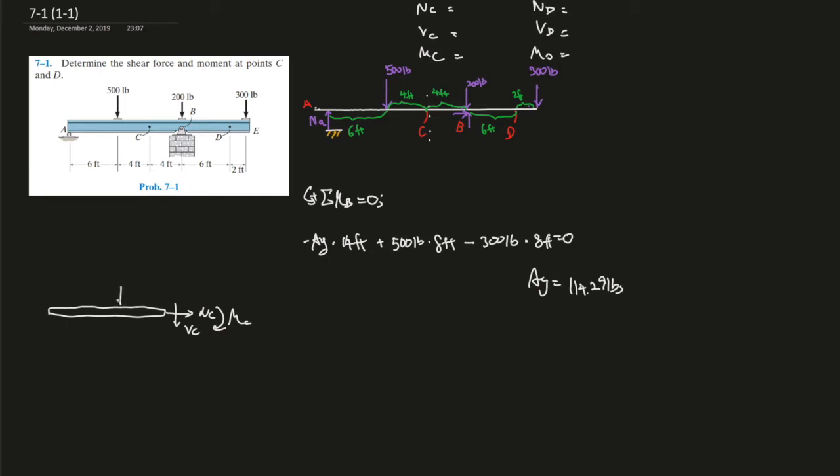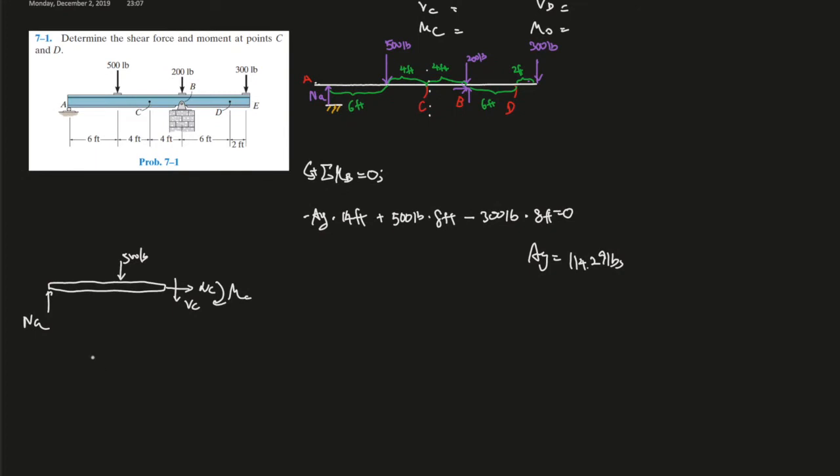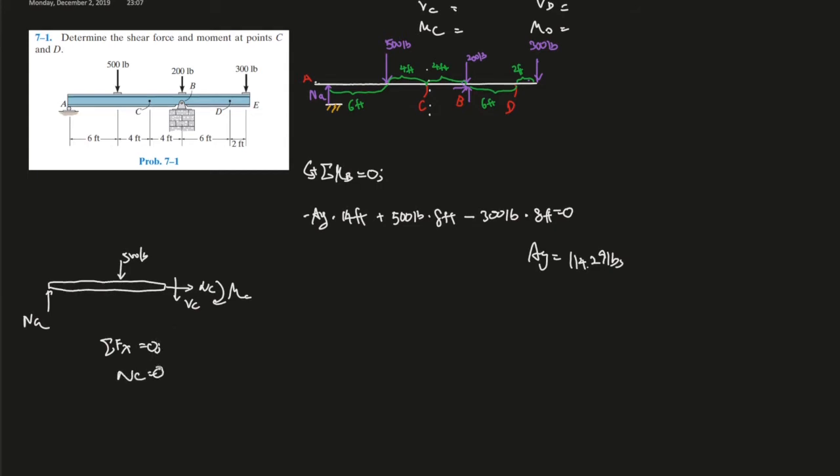We can use sum of the forces in the X direction. That would give us zero. So NC would give us zero because there's no other force going in the X direction in the system we just drew. Zero pounds.